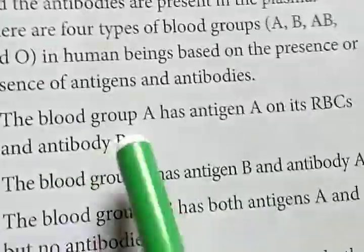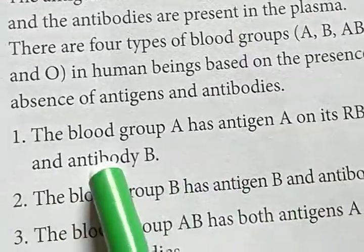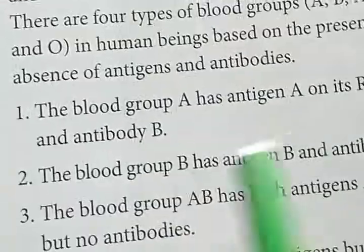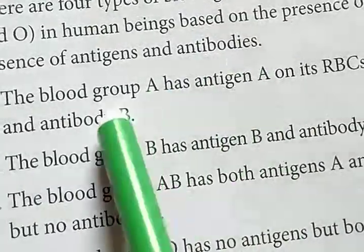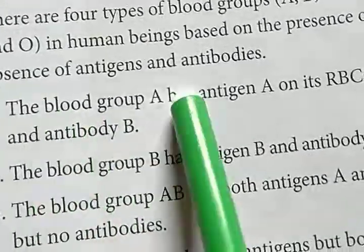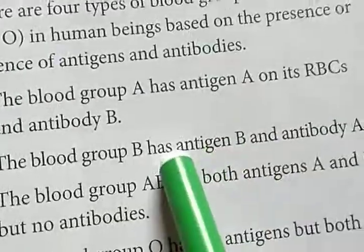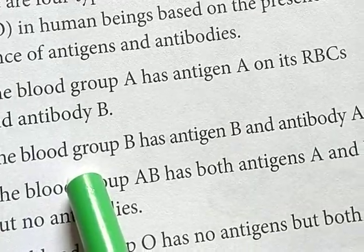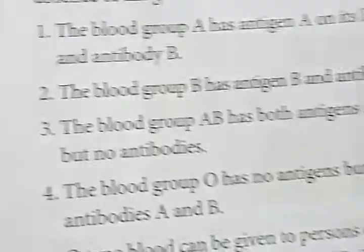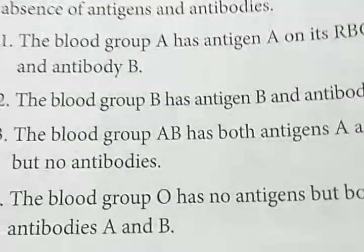Blood group A has antigen A on its RBC and antibody B. Blood group B has antigen B and antibody A — the phenomenon is totally opposite. Blood group AB has both antigens A and B and no antibodies.